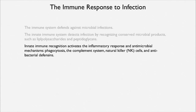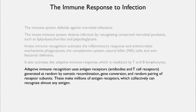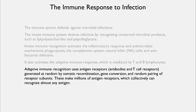The innate immune response also activates the adaptive immune response, mediated by T and B lymphocytes — T lymphocytes mature in the thymus and B lymphocytes in the bone marrow. Adaptive immune recognition uses antigen receptors — antibodies and T cell receptors — which are extremely diverse. They're generated at random by somatic recombination, gene conversion, and random pairing of receptor subunits, and can make millions of antigen receptors that collectively can recognize almost any antigen, allowing very specific responses that can overwhelm a particular pathogen or even a particular cancer cell type.